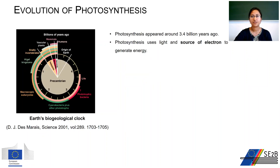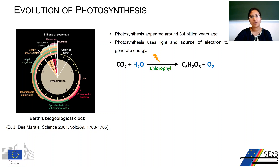The origin and evolution of photosynthesis is a complex story which began around 3.4 billion years ago, not long after the origin of life. This process uses light and a source of electrons to produce food. In the modern-day form of photosynthesis, the source of electrons is water, and it generates oxygen as a by-product through the decomposition of water. This type is called oxygenic photosynthesis.